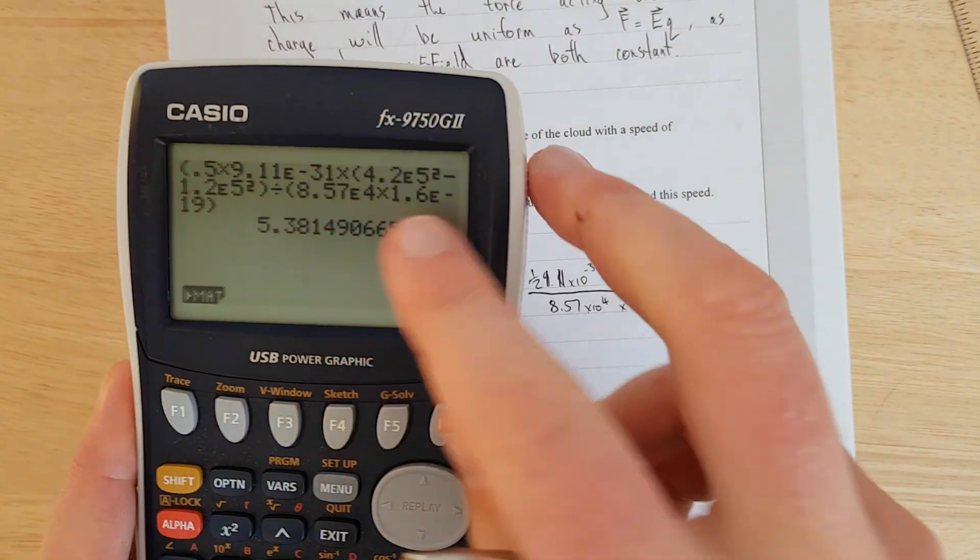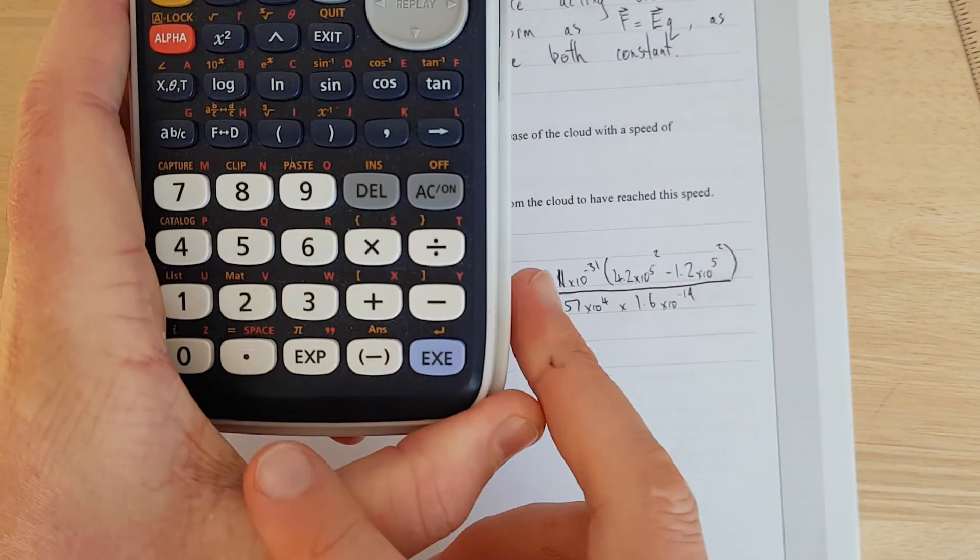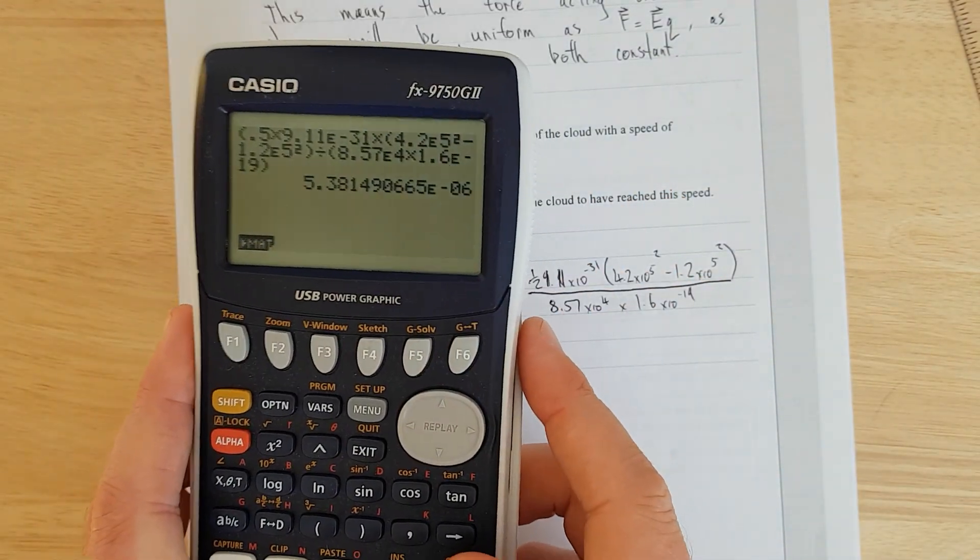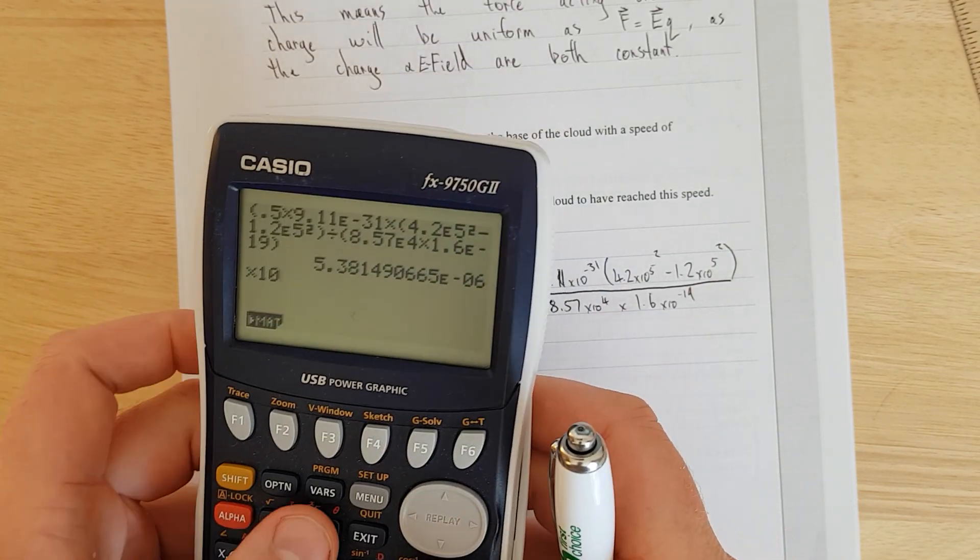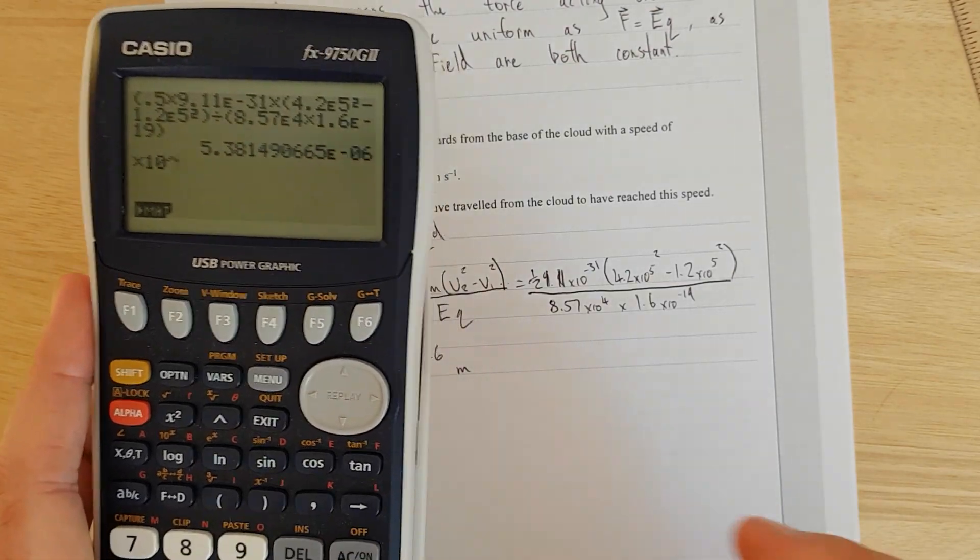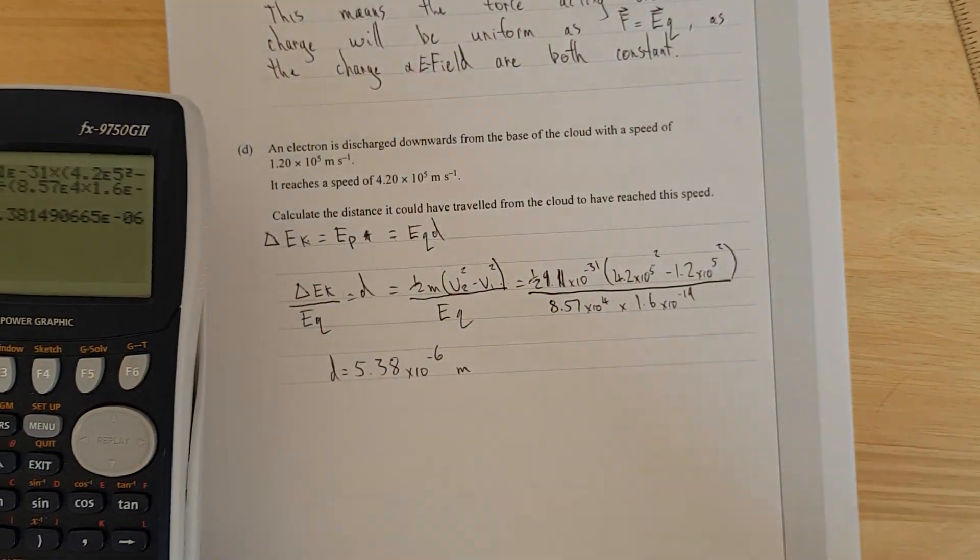Notice I used E. It avoids a lot of syntax. It's not E, it's EXP, which is essentially the same as writing times 10 to the power of. But it avoids a lot of syntax errors.